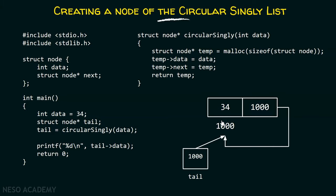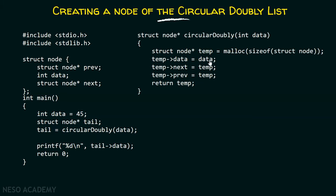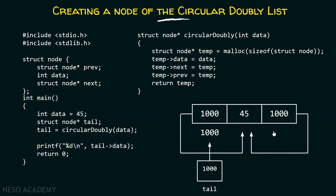Now let's create a node of the Circular Doubly Linked List. The program is similar, but here the struct node has three members: prev, data, and next. In the main function we have a data variable with value 45 and a tail pointer. We call the circularDoubly function. Inside the function, to the data part we pass the data, to the next part we pass temp, and to the prev part we also pass temp — that is the difference. We return the address of the node back to the main function, received by tail. In the resulting node, the prev part and the next part both contain the address of this node, and tail is pointing to this node.